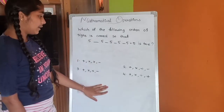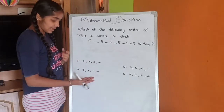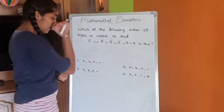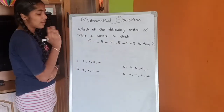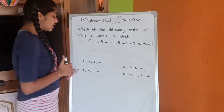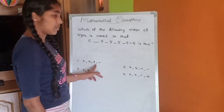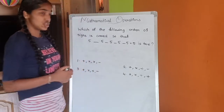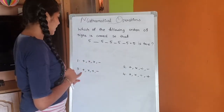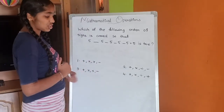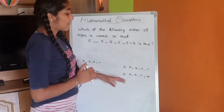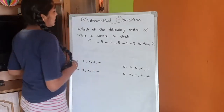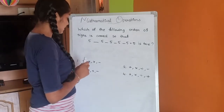We need to find the correct sequence of signs so that this equation becomes true. We have four options: the first option is addition, multiplication, multiplication, subtraction; the second option is addition, multiplication, division, and subtraction; the third option is addition, multiplication, addition, and subtraction; the fourth option is addition, multiplication, division, and addition.